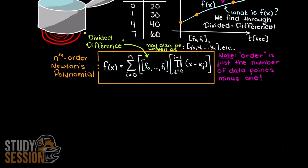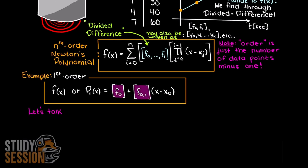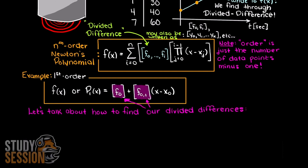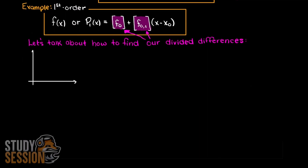I'm just going to take a second and write out the general first order Newton's polynomial here. Let's begin talking about how we find the Newton polynomial coefficients and what they look like. Let's start simple with only two data points and derive this formula to better understand divided difference interpolation. With two data points, remember that we have an n minus 1 order Newton polynomial, and therefore we need a first order Newton polynomial.